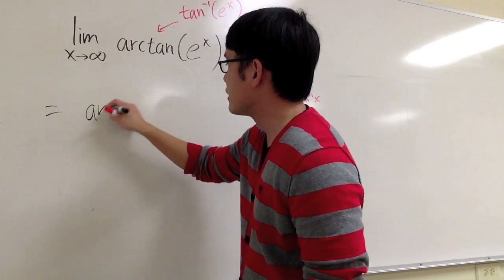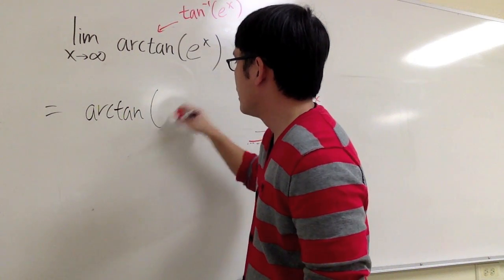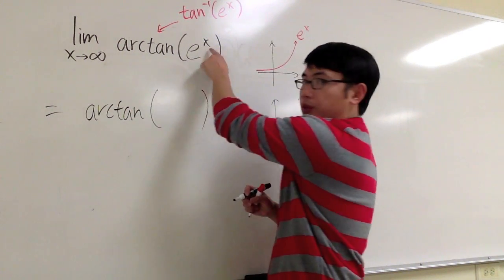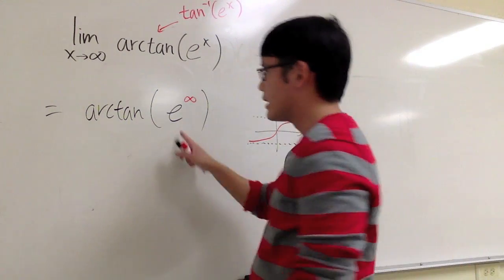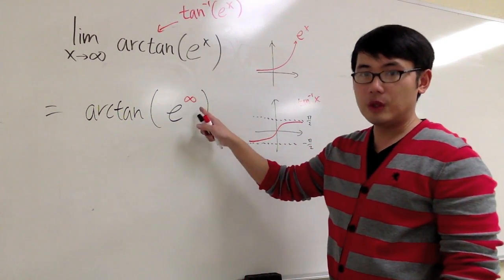Here, I will have the arctangent, and then I'm plugging infinity into here. I will have e, and when x goes to infinity, it will be like that. But then here, e to the infinity is infinity, because you can see the graph.